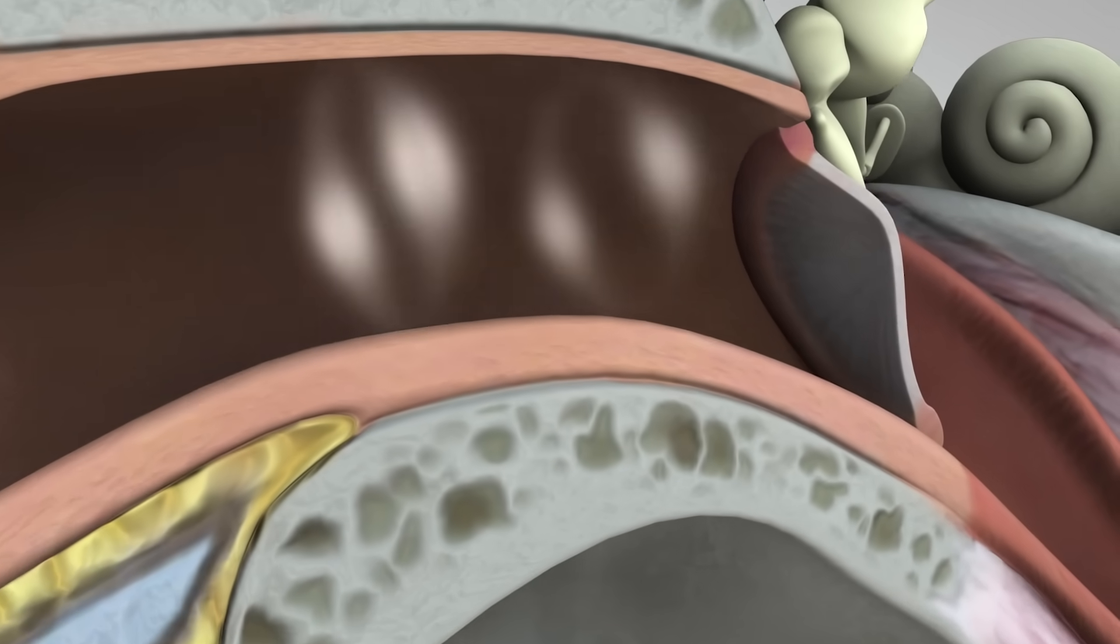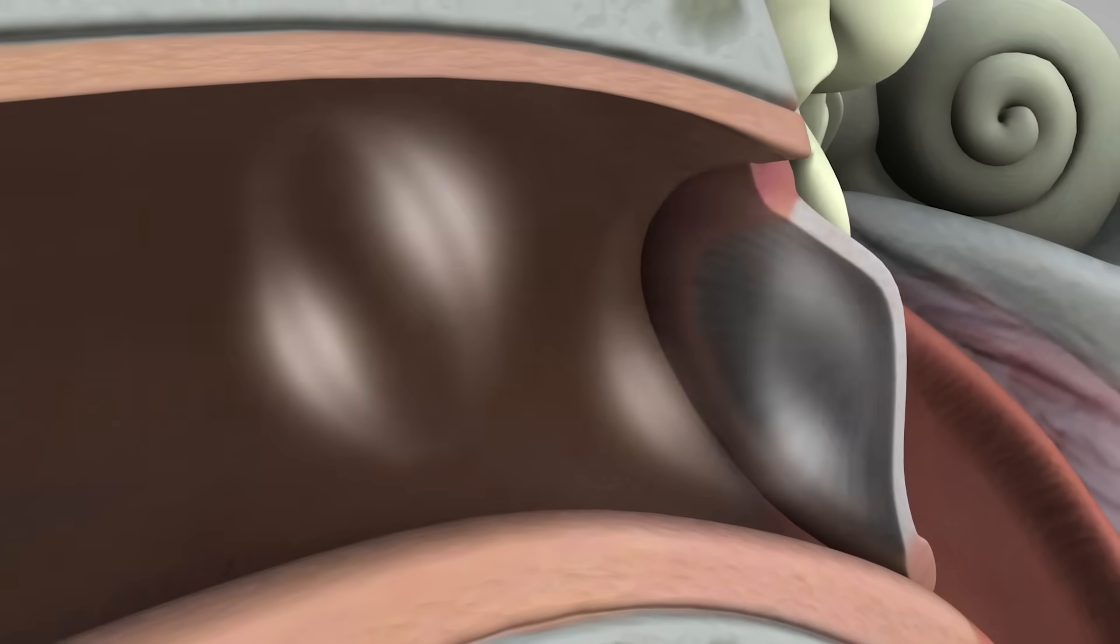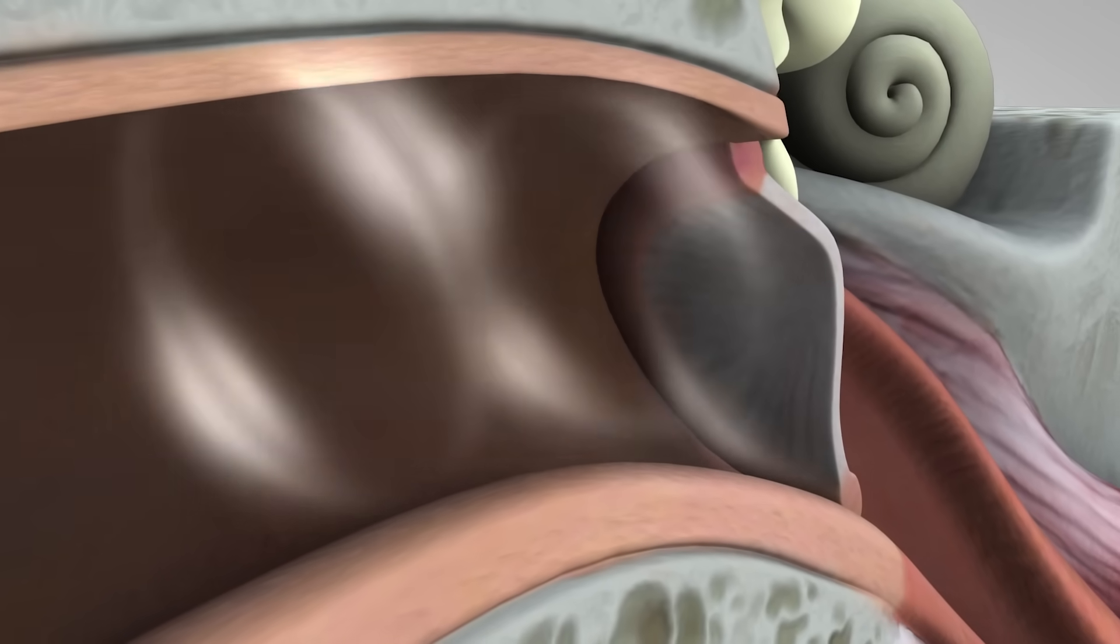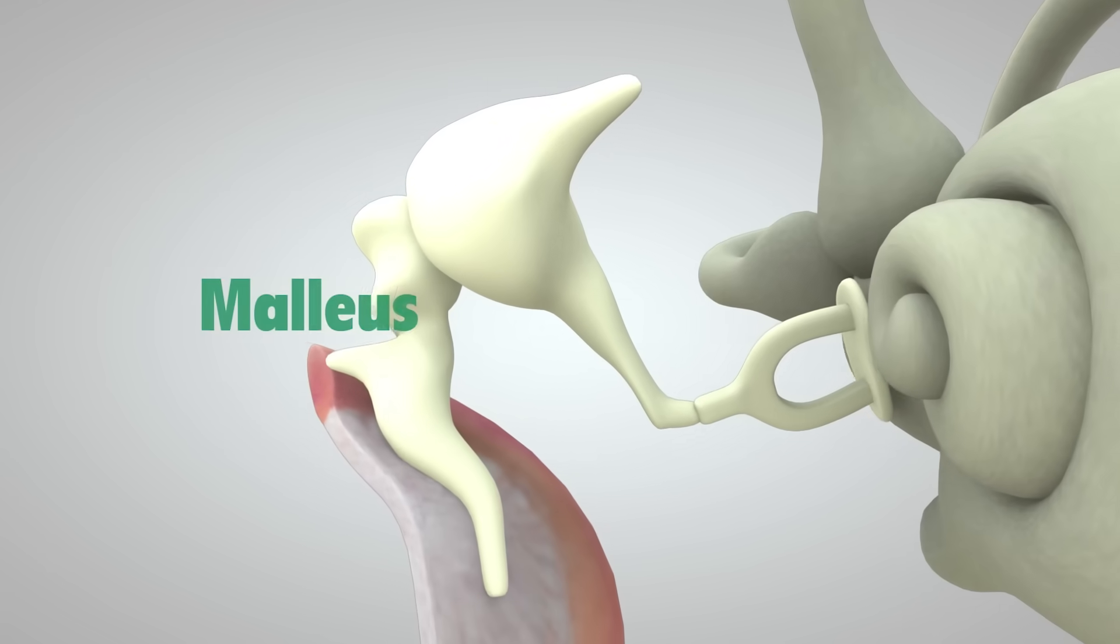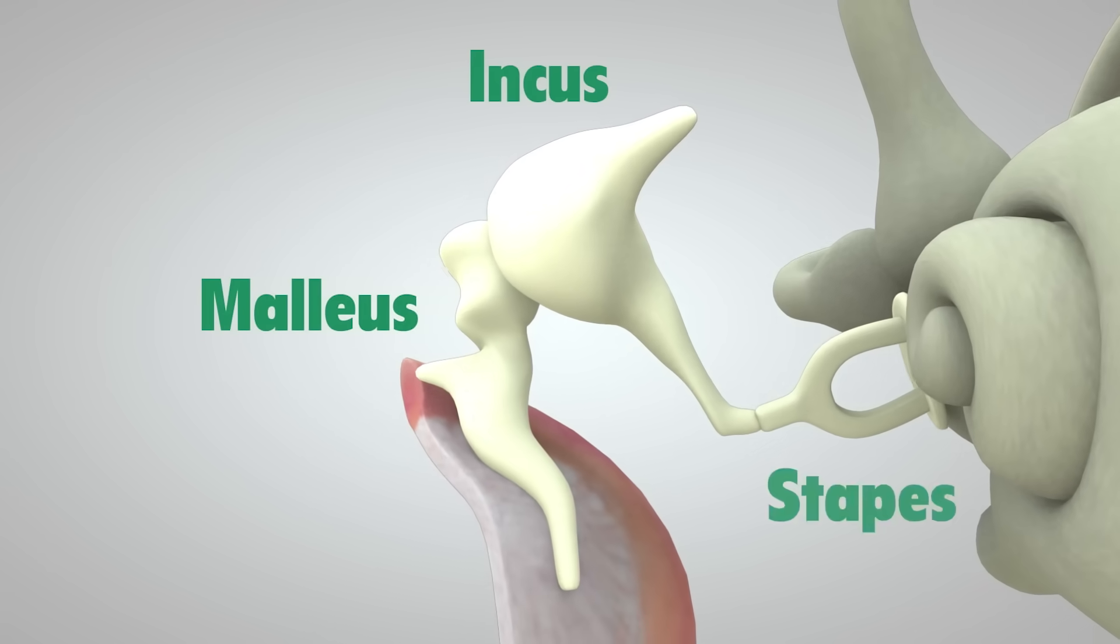The sound waves reach the eardrum, which is a membrane roughly half the size of a dime. They make the eardrum vibrate, which in turn vibrates three tiny bones called the malleus, incus, and stapes.